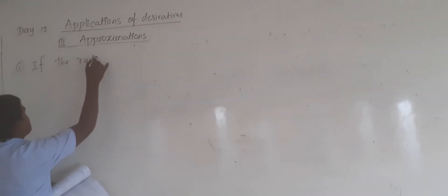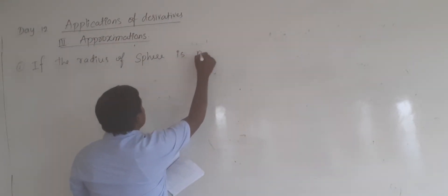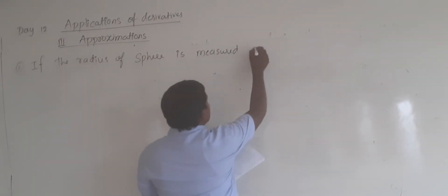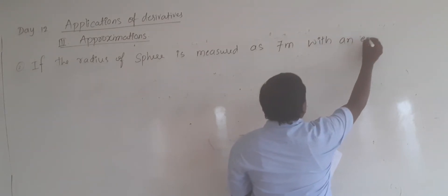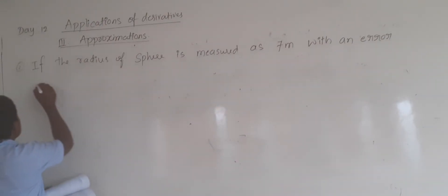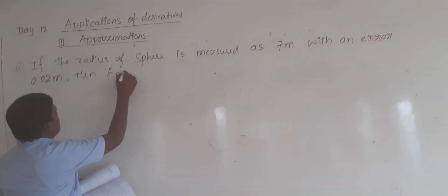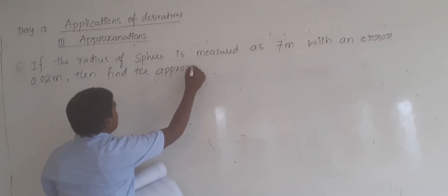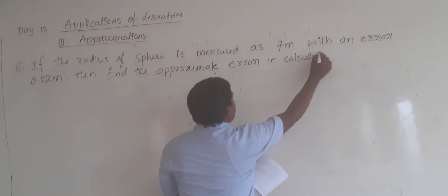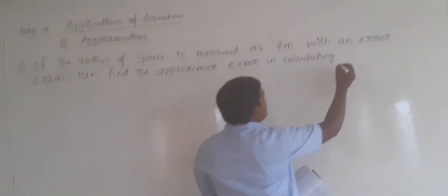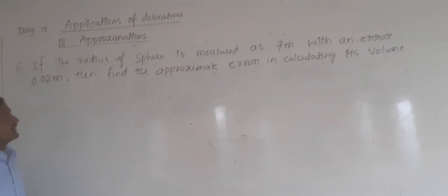Second problem: the radius of a sphere is measured as 7 meters with an error of 0.02 meters. Then find the approximate error in calculating its volume. This is the problem related to sphere.